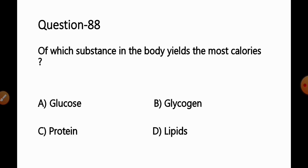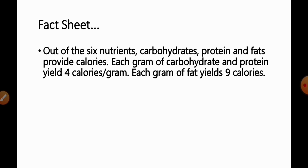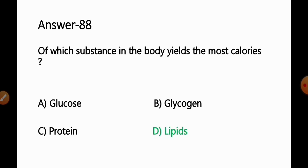Question No. 88: Which substance in the body yields the most calories? Options: A: Glucose; B: Glycogen; C: Protein; D: Lipids. Each gram of carbohydrates and protein yields 4 calories, whereas each gram of fat or lipids yields 9 calories. So it is lipids that yield the maximum calories. Option D — lipids — is the correct answer.